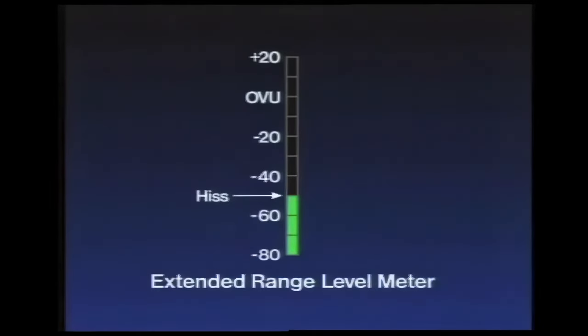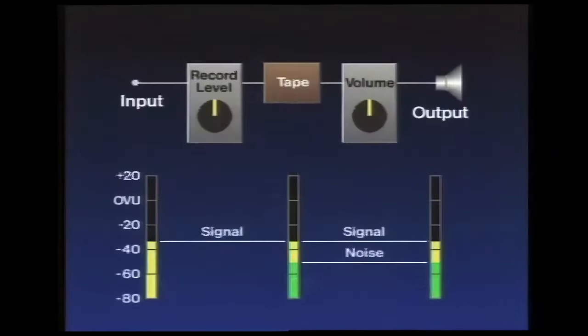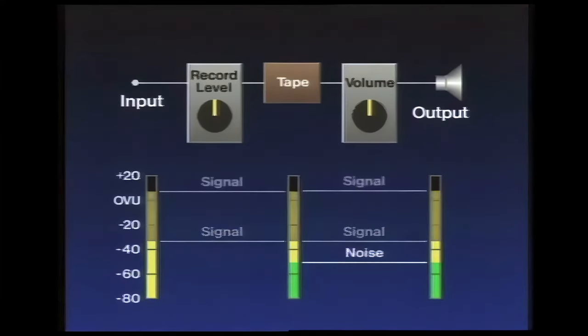Tape hiss. It's the noise caused when magnetic particles on recording tape move over the playback head. In audio cassettes, tape noise is loud enough to be annoying, especially beneath soft passages of music or between songs. But notice that as the music gets louder, the noise is no longer audible.